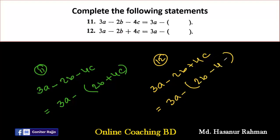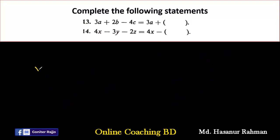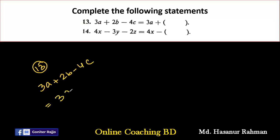In a similar way we solve number 12. Number 12 says: 3a minus 2b plus 4c. After 3a minus, we add a bracket: minus 2b divided by minus gives plus 2b, plus 4c divided by minus gives minus 4c. For number 13: 3a plus 2b minus 4c. After plus we add the bracket; the signs remain unchanged, so it becomes 3a plus (2b minus 4c).